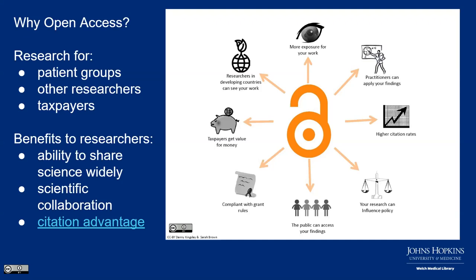There are also direct benefits to researchers that are often not shared but are great. First is the ability to share science widely and to collaborate — scientific collaboration is really big, multidisciplinary, interdisciplinary, etc. There's also some evidence of a citation advantage for research that is open access, since people tend to cite and read what they can actually read in full text without having to dig to find.